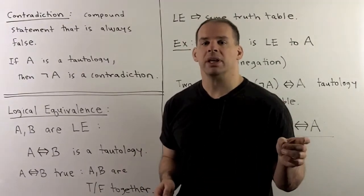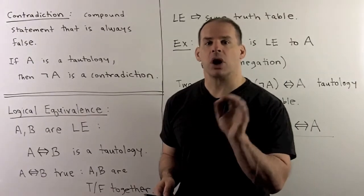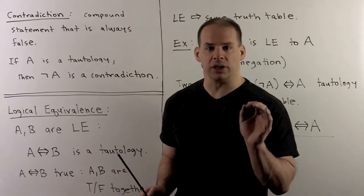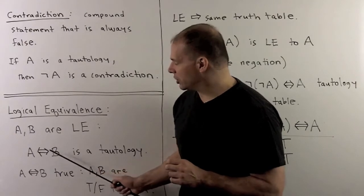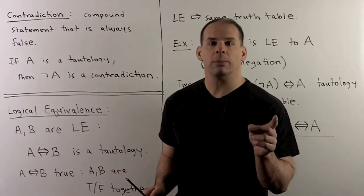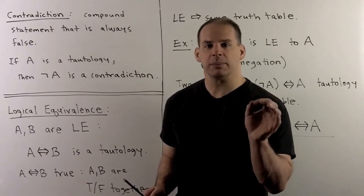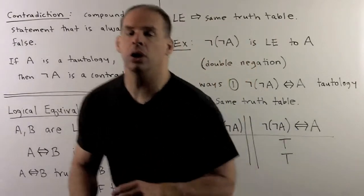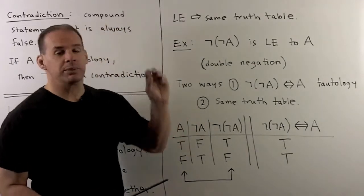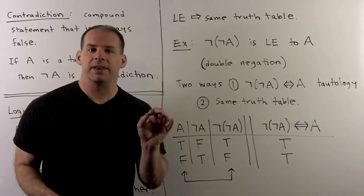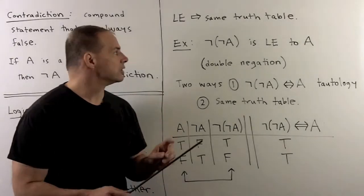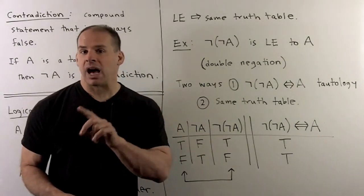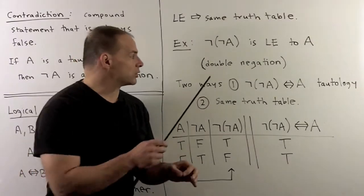Now we move away from constructions and consider when two statements are the same — this is what we call logical equivalence. A and B are logically equivalent if A biconditional B is a tautology. Recall, for A biconditional B to be true just means A and B are either both true or both false. That means A and B are logically equivalent if they have the same values in their truth table. For an example, let's show that the negation of the negation of A is logically equivalent to A itself — this is called double negation.